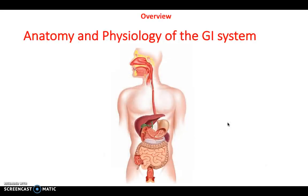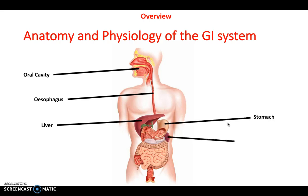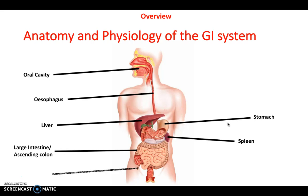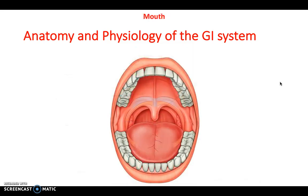Now let's focus on the anatomy of the GI system from a surface point of view. Starting with the oral cavity, going down into the esophagus, then you've got the liver, the stomach, and the spleen tucked away behind. Then you have your large intestine or ascending colon, the appendix, the gallbladder, then going into your rectum and anal canal. Understanding the basic surface anatomy of the GI system is really important as it can come up in exams.